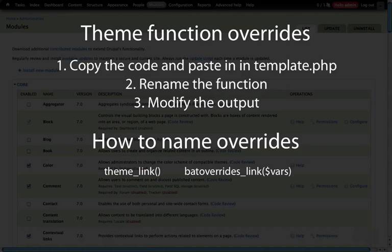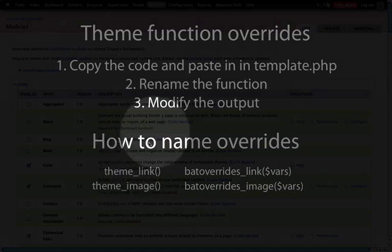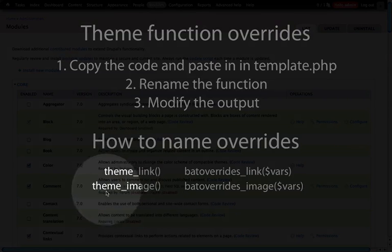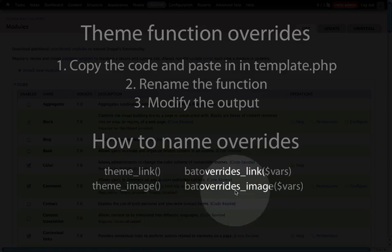Let's look at a couple of other examples. If we want to override theme_image, we would use the name of our theme, again underscore, and then the part that comes after theme underscore. So we see this is theme_image, and then we just replace theme with the name of our theme, giving us our_theme_image.